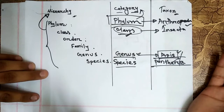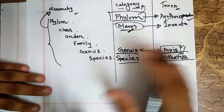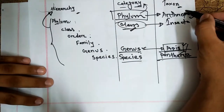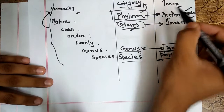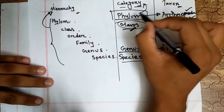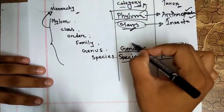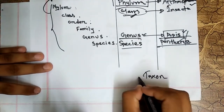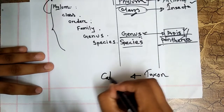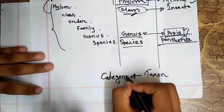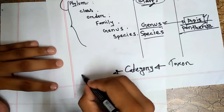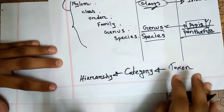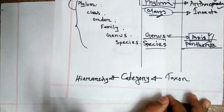In short, taxon is the example of category, and the series of categories form hierarchy. So taxon is the example of category, and category forms the hierarchic system of classification, or hierarchy. I hope we understand the difference between these confusing terms.